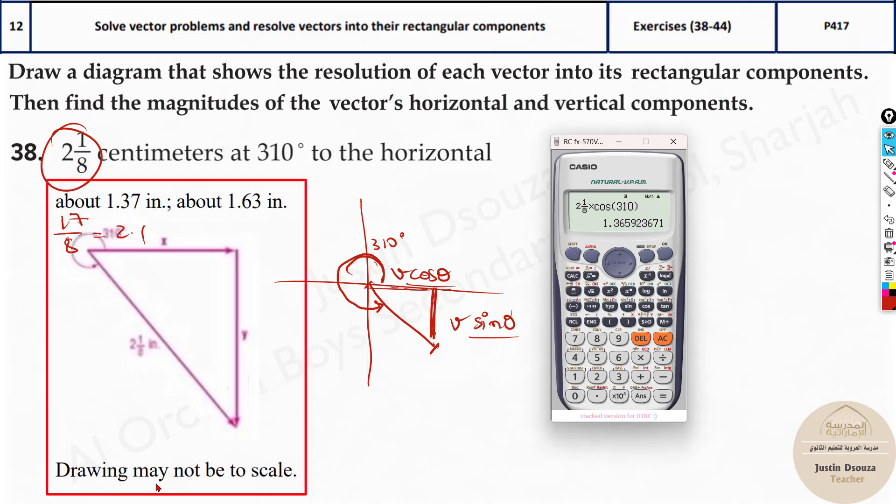Let us just check the answer. You can look into the options and see how many digits are there after decimal and round it off accordingly. Here we have 1.37. That is the horizontal axis, x. And what about the y? All you need to do is change this cosine to sine, and you will get the answer. That is negative 1.63.